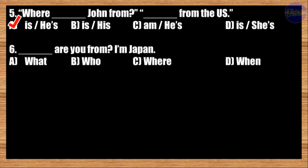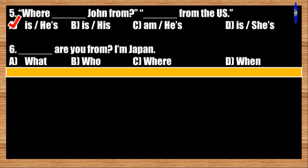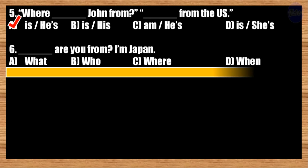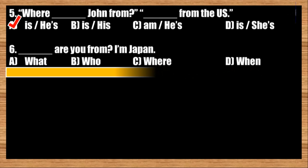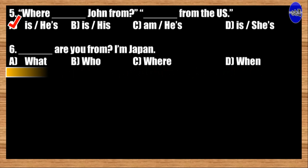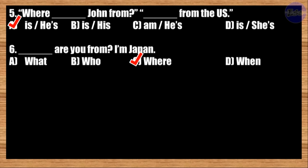Number six: Blank are you from? I'm from Japan. A: What; B: Who; C: Where; D: When. The correct answer is option C. Where are you from? I'm from Japan.